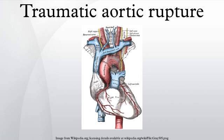Traumatic aortic rupture, also called traumatic aortic disruption or transection, is a condition in which the aorta, the largest artery in the body, is torn or ruptured. The condition is frequently fatal due to the profuse bleeding that results from the rupture. Since the aorta branches directly from the heart to supply blood to the rest of the body, the pressure within it is very great, and blood may be pumped out of a tear in the blood vessel very rapidly, which can quickly result in shock and death.